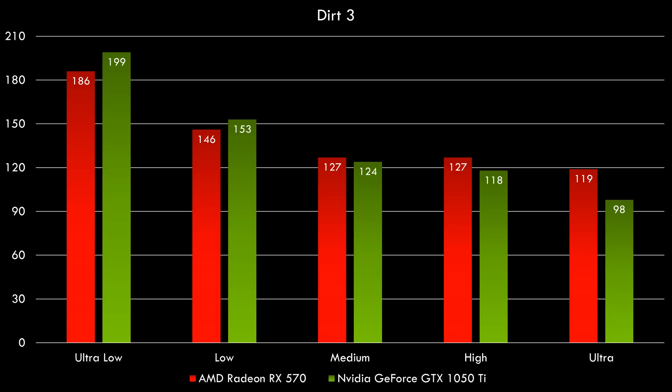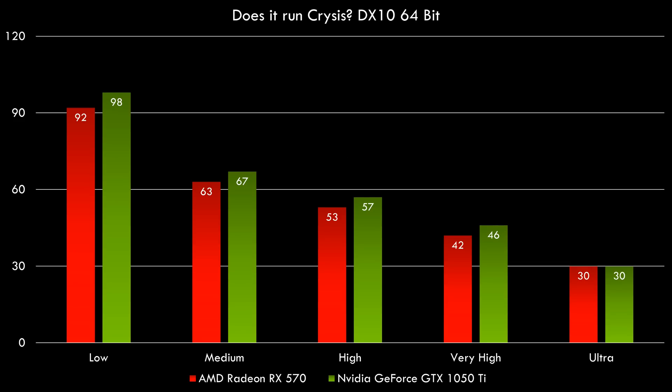And we have one more game: Crysis in DirectX 10 64-bit version. Here the GeForce is faster across the board. Crysis is a game we've been benchmarking on various machines and it is extremely bound by the processor. Usually the video card is doing just fine, but you need a very fast processor. It also doesn't take advantage of multiple cores very well — it needs one really fast single core with high IPC.